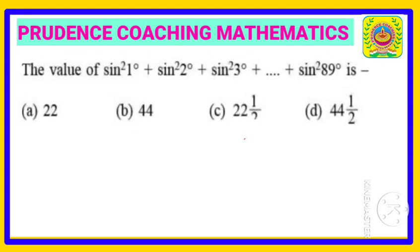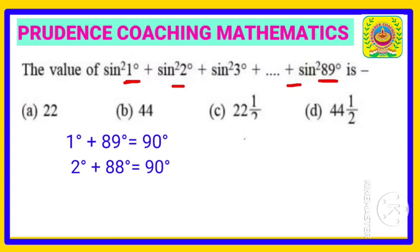If you see the first term, we have 1 degree. Last term we have 89 degrees. If you add 1 plus 89 degrees you get 90. Similarly, 2 and the previous term of 89 will be 88, so 2 plus 88 is 90.